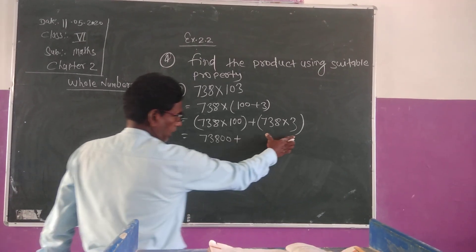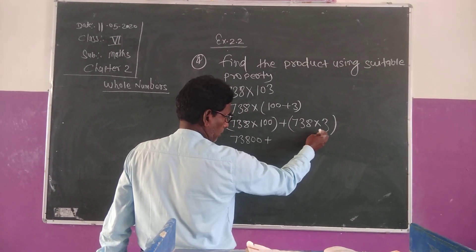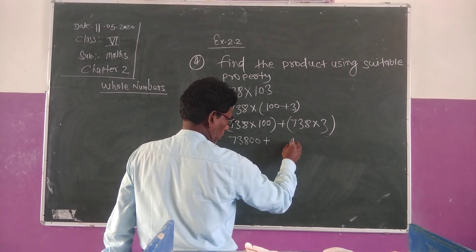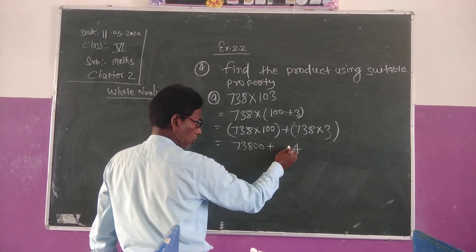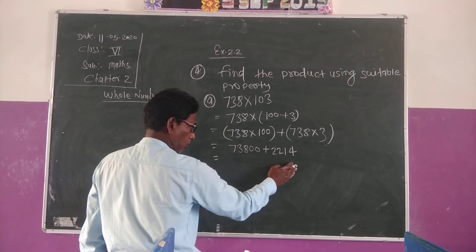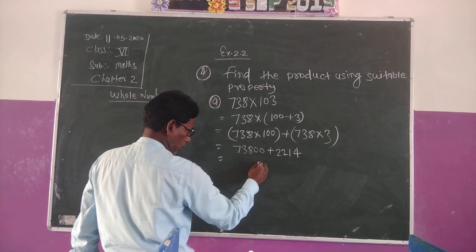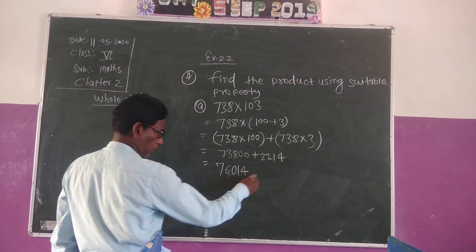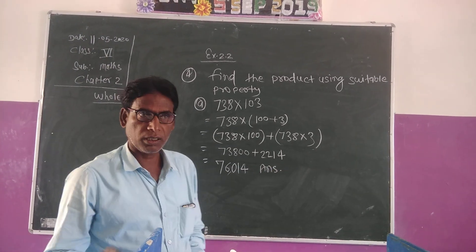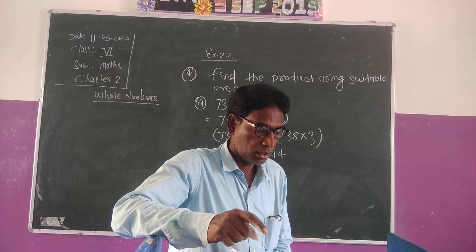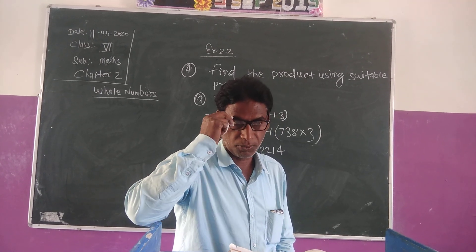We can multiply both. Result will be 73800 plus, when we multiply 3 times 738: 3 times 8 is 24, carry 2; 3 times 3 is 9 plus 2 is 11, carry 1; 3 times 7 is 21 plus 1 is 22. So 2214. Now we add both: 76014. Answer. Now solve the next question, and I am going to solve question number 5.